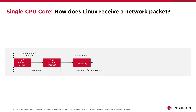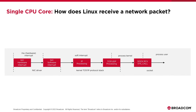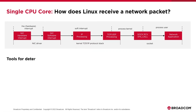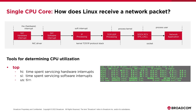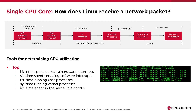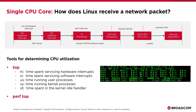The packet then goes through the kernel stack, is processed by the kernel, passes through the socket, and ultimately reaches the user application. You can think of this process in reverse for packet transmission. One tool useful for examining this whole process is 'top' — I have a screenshot here — which can help determine where processing time is slow. For example, if you're spending a lot of time in the kernel stack, you may surmise the issue is not on the NIC or hardware itself, but rather some tuning or problem at the OS level.